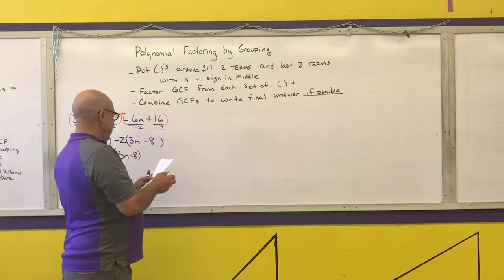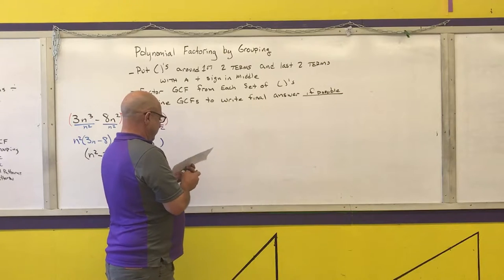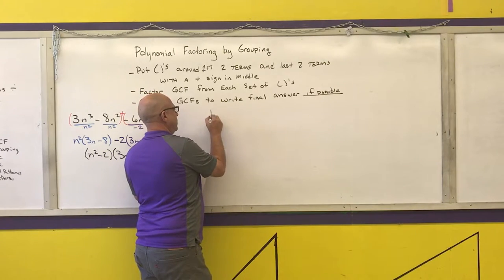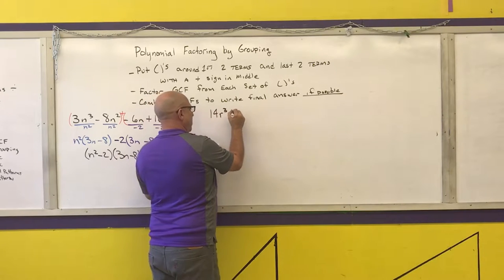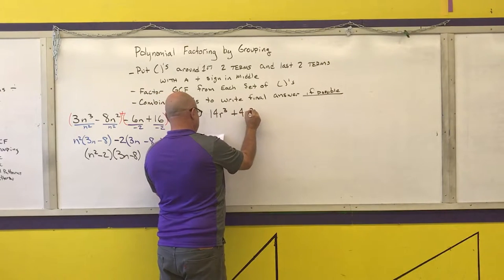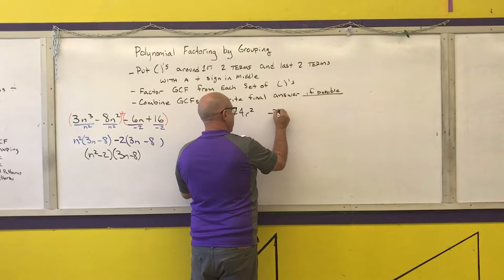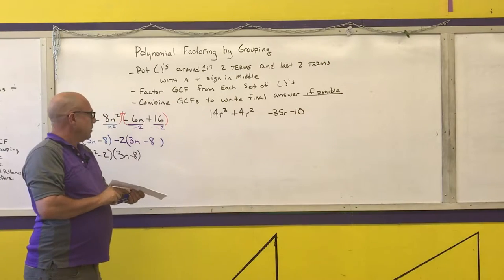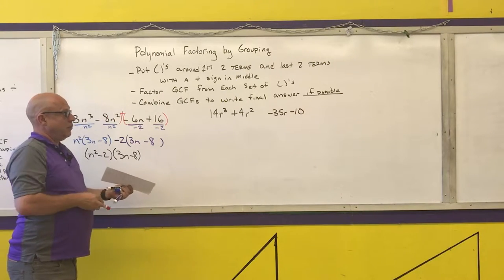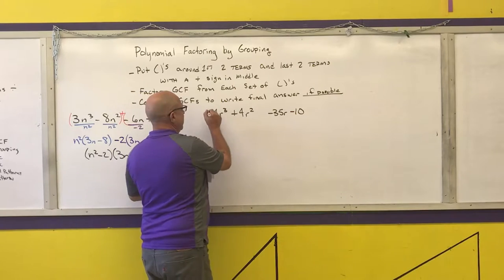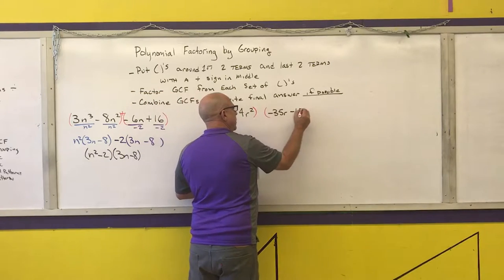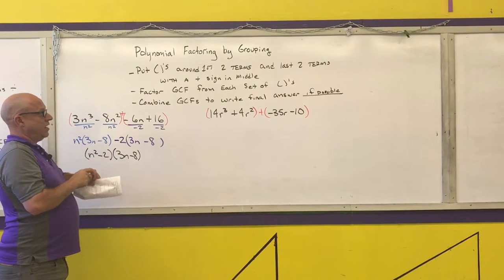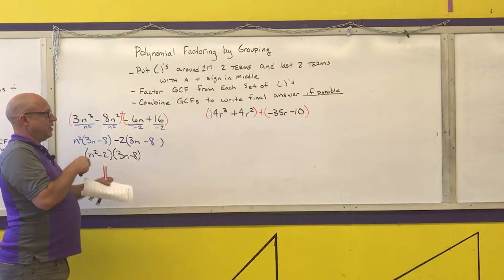Let's do another example: 14r cubed plus 4r squared minus 35r minus 10. Step 1 — parentheses around the first two terms, parentheses around the last two terms, plus sign in the middle. Step 2 — find the greatest common factor of each group.